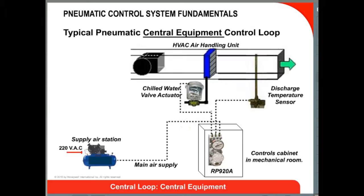For central equipment control, the RP920 family of controllers are used. In this example, the RP920 is controlling flow to a coil in an air handler. They are also used to control small and large air handlers, humidifiers, boilers, chillers, cooling towers, heat exchangers, and supply water distribution. They are available in a number of styles to meet a variety of common HVAC control applications.